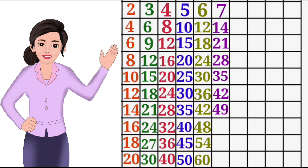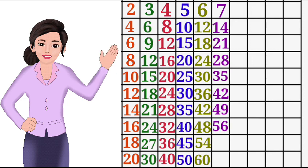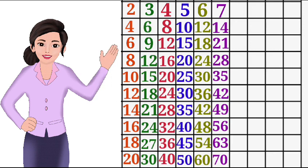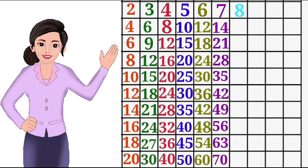7 8s are 56, 7 9s are 63, 7 10s are 70. 8 1s are 8, 8 2s are 16.